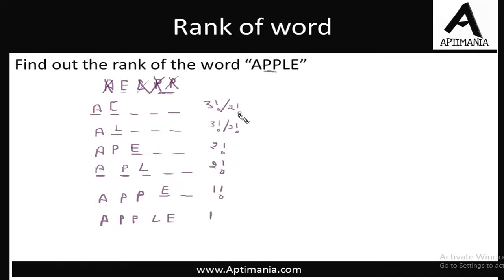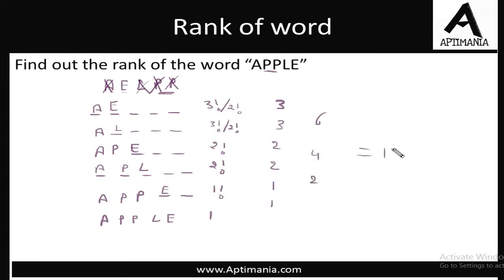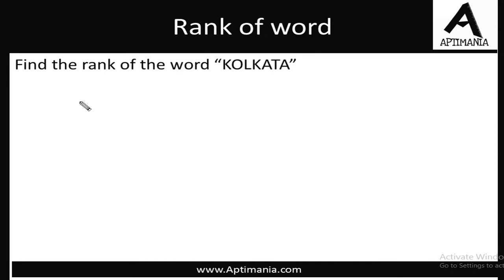So the total number of cases is: 3 factorial divided by 2 = 3, then 2 and 2, then 1, then 1. This is 3 + 6 + 2 + 1 = 12 (with intermediate sums: 6 + 4 + 2 = 12). The rank of the word Apple in the dictionary is 12.